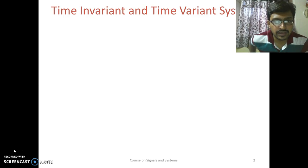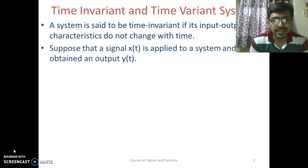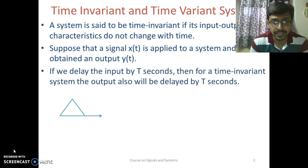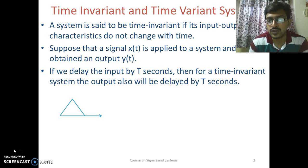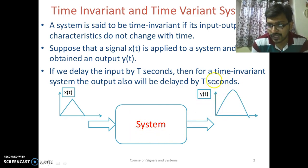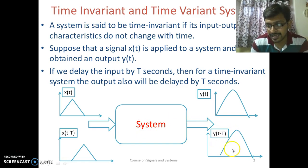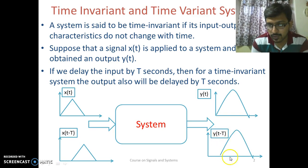A system is said to be time invariant if its input-output characteristics do not change with time. Suppose that a signal x is applied to a system and we are getting an output y. Now if we delay the input by T seconds, then for a time invariant system the output will also be delayed by T seconds. So if the input is delayed, the output is also delayed by the same amount of time — the system is a time invariant system.